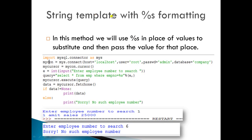The next method is string template with %s formatting. In this method we use %s in place of values to substitute, and then pass the value for that placeholder. Here is the code: import mysql.connector, establish the connection object, and create the cursor. The variable e stores the employee number to search.